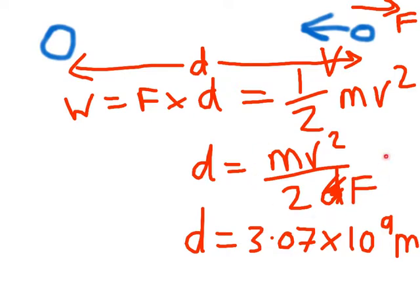Now, is this plausible? Well, it's got mass on the top here, which means if the space probe weighs more, it's going to need a larger distance. That makes sense. v is on the top, and so that also makes sense. If the space probe is going faster, it will take longer to slow down.